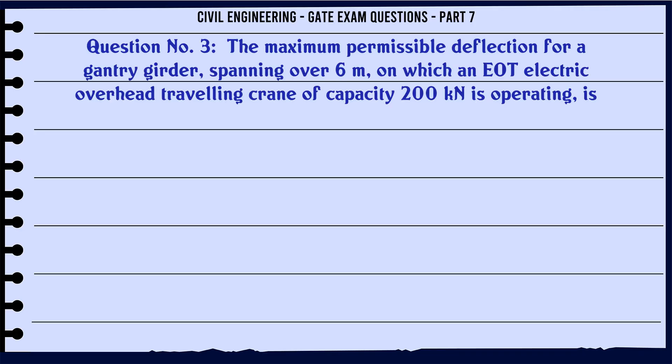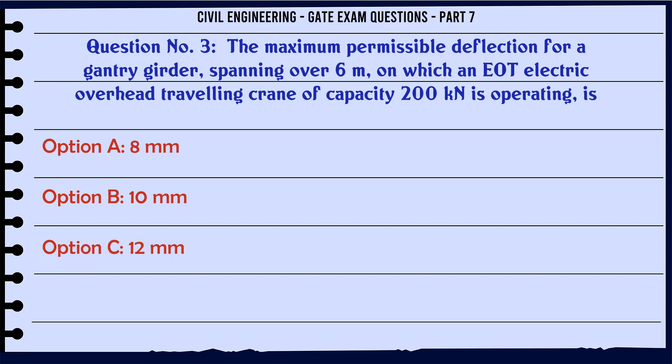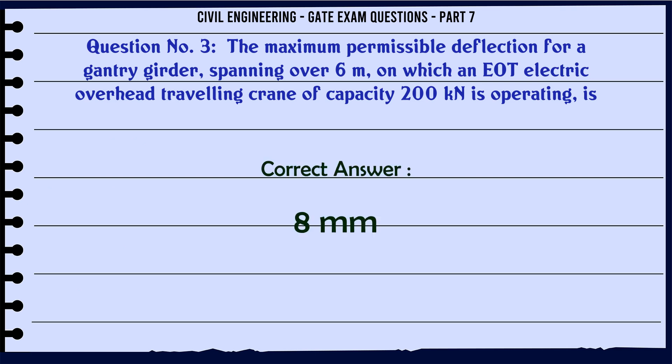The maximum permissible deflection for a gantry girder spanning over 6 m on which an EOT (electric overhead traveling) crane of capacity 200 KN is operating is: A) 8 mm, B) 10 mm, C) 12 mm, D) 18 mm. The correct answer is 8 mm.